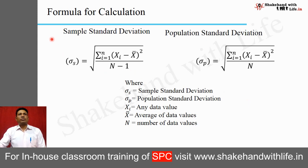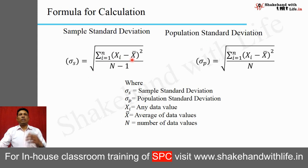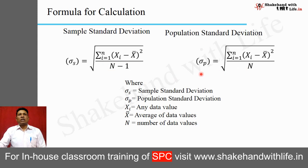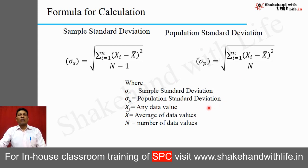There are two types of formulas for standard deviation. For sample standard deviation (σs), the formula is the square root of the summation of squared deviations of each individual value from the mean, divided by n minus 1, where n is the total number of observations. For population standard deviation (σp), n minus 1 is replaced by n. The notations are: σs for sample standard deviation, σp for population standard deviation, xi for any data value, x-bar for the average, and n for the number of data values.